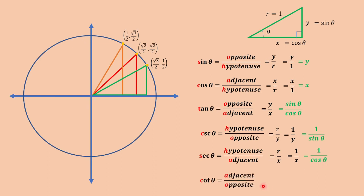Cotangent theta is equal to adjacent over the opposite. So we have x over y. In terms of sine theta and cosine theta, we have cosine theta divided by sine theta.